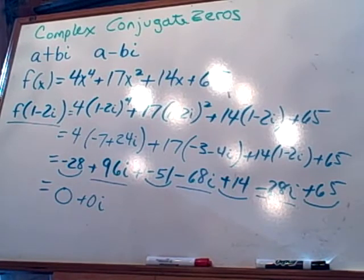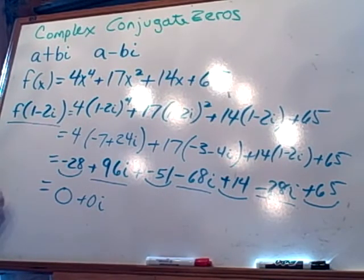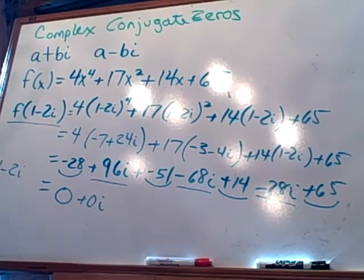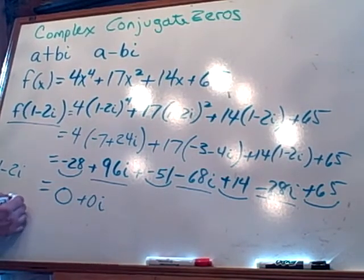Does that make sense? We can find the other zero. What's the other zero if 1 minus 2i is a zero? 1 plus 2i. Then 1 plus 2i is also a zero.